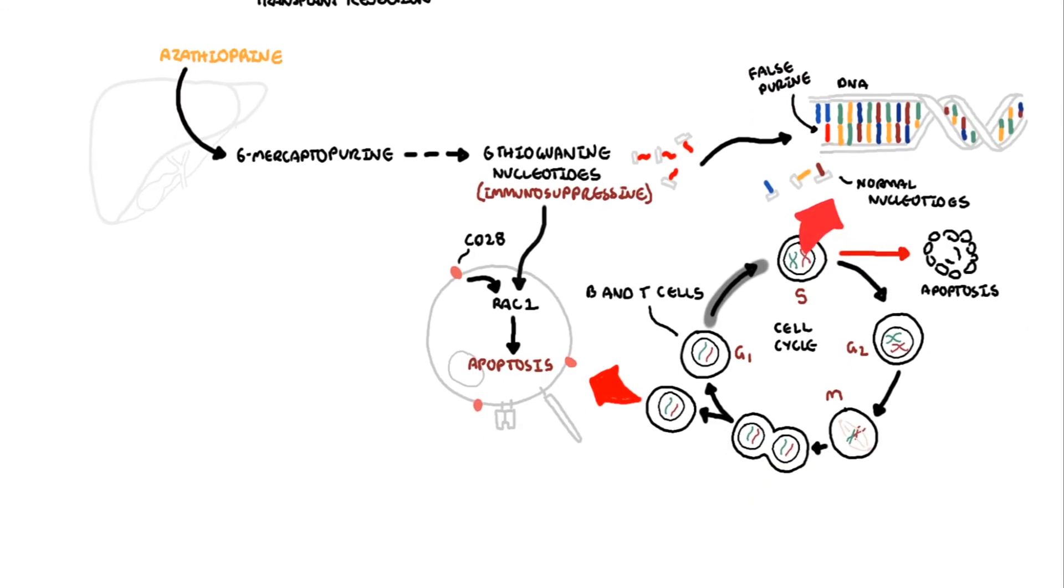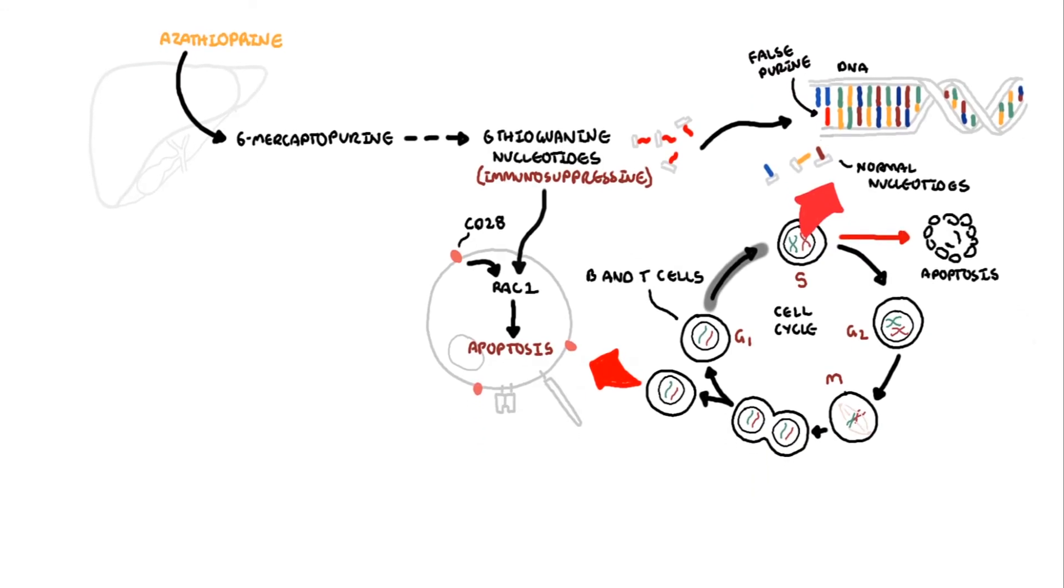An alternative metabolic pathway of 6-mercaptopurine is via xanthine oxidase, which will form 6-thiouric acid. 6-thiouric acid is non-toxic and can be cleared by the body.